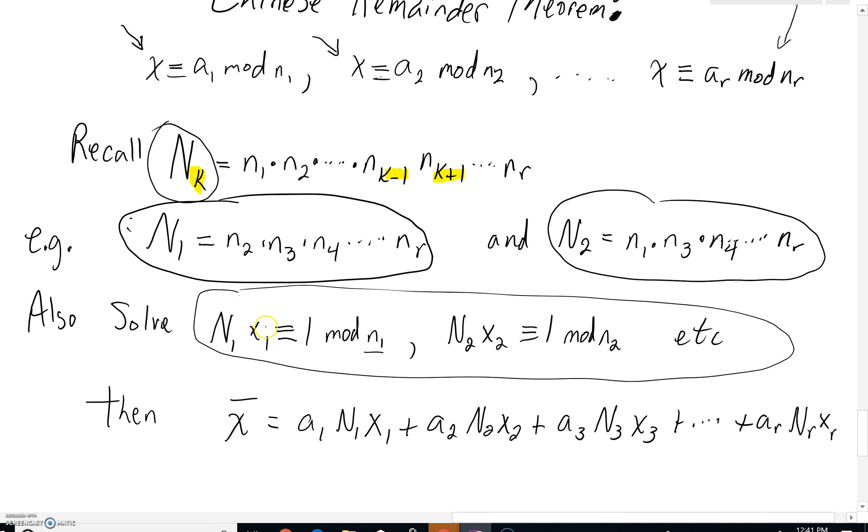Once you solve that, you'll have an x sub 1 answer. Then we move on to n sub 2, and n sub 2 times some second x value would be congruent to 1 mod n sub 2. We'd solve those, so we'd have an x sub 1, x sub 2, all the way up to x sub r.